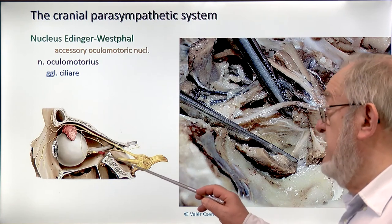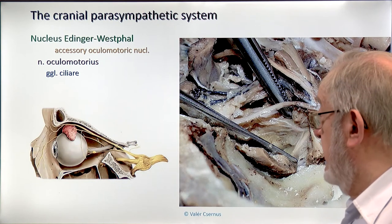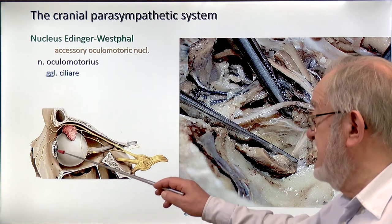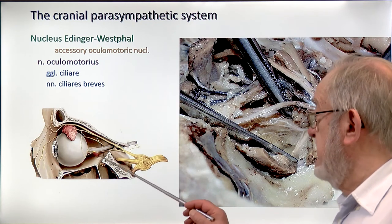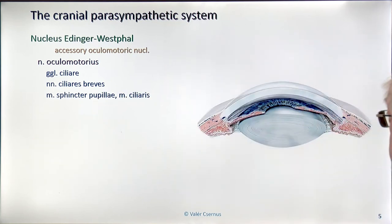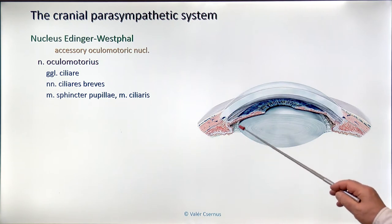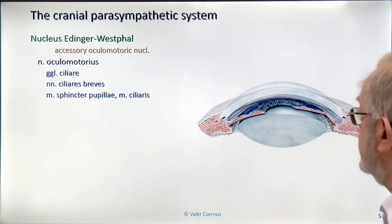The post-ganglionic fibers, obeying the rule, join the nearby trigeminal branch. Going toward the eye, these are the short ciliary nerves — nervi ciliares breves — and together with sensory fibers they go to the target. They have two targets: one is the sphincter pupillae, which is the effector of the light reflex, and the other is the ciliary muscle, which changes the shape of the lens and thereby controls accommodation — the changing of the focal distance of the eye lens.